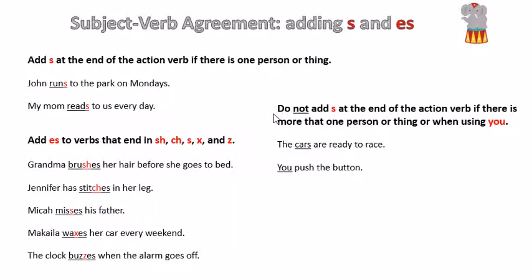Very important rule here. Do not add S at the end of the action verb if there is more than one person or thing, or when using you. Here's an example. The cars are ready to race. You don't need to add an S to cars because it's already plural. You push the button. You would not say you pushes the button because it's improper English. So you'd say you push the button.